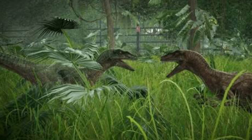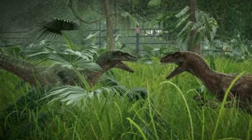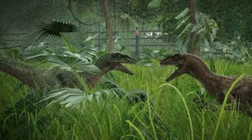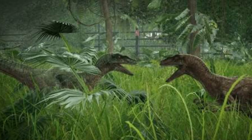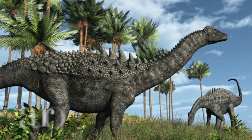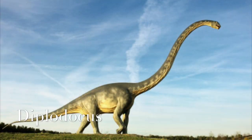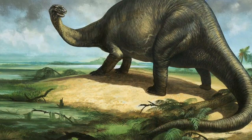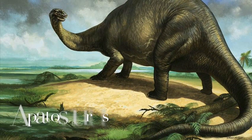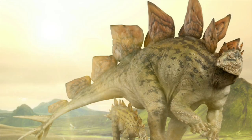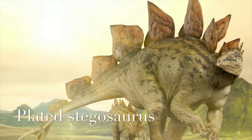The terrestrial life of the Jurassic featured the largest dinosaurs of the time — in fact the largest land animals of all time — the gigantic sauropods, such as the famous Diplodocus, Brachiosaurus, and Apatosaurus. Other herbivorous dinosaurs of the Jurassic included the plated stegosaurs.